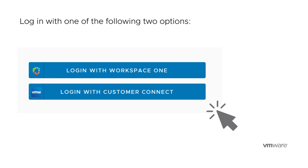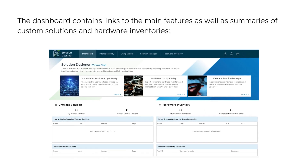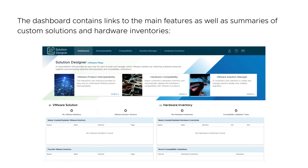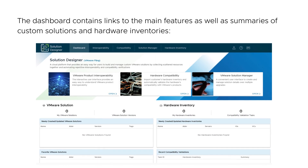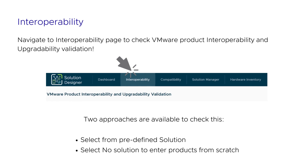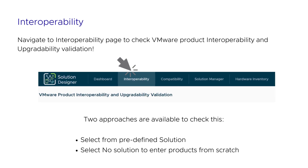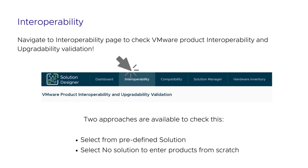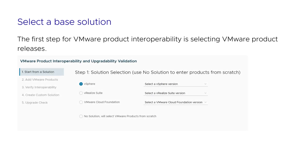We'll break this down into steps, so feel free to follow along. First, head over to vsd.esp.vmware.com and log in. It will take you to the dashboard, which contains links to the main features as well as summaries of custom solutions and hardware inventories. Next, navigate to the Interoperability page to check VMware product interoperability and upgradability validation. Two approaches are available: the first is to select from a predefined solution. Any custom-defined solution can be retrieved from MySolutions, or select NoSolution to enter products from scratch. Next, you will be prompted to select a base solution.